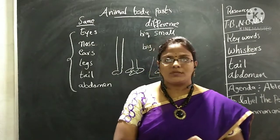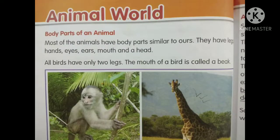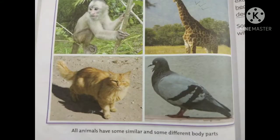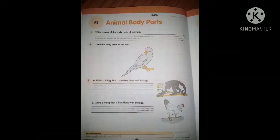Now open your textbook, page number 76 — Animal World, Body Parts of an Animal. Most of the animals have body parts similar to ours. They have legs, hands, eyes, ears, mouth, and a head. All birds have only two legs. The mouth of a bird is called a beak. You can see pictures of monkey, giraffe, cat, and bird. Some animal parts are similar and some are different.